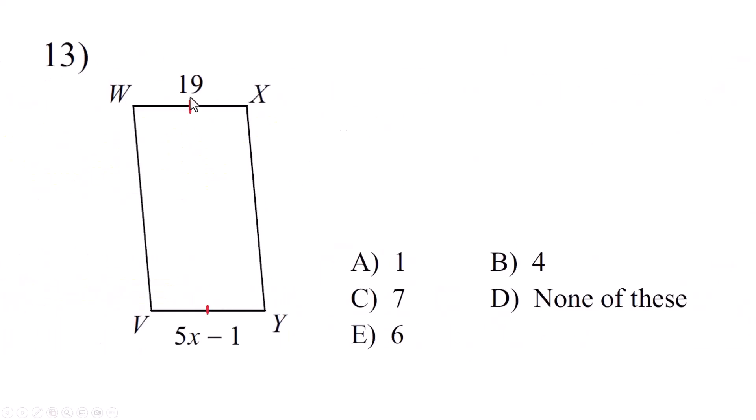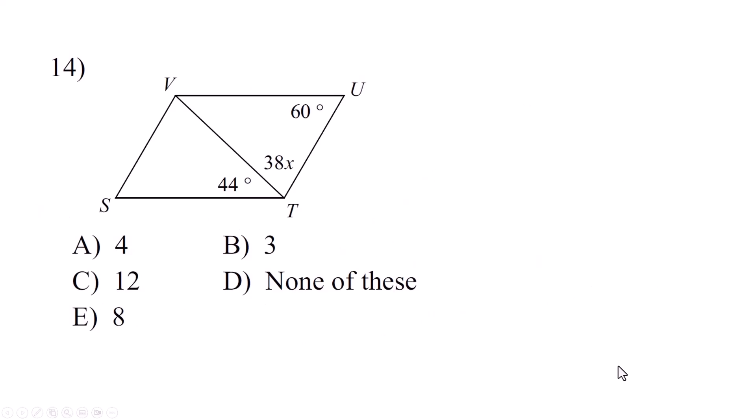In the parallelogram, opposite sides are congruent, which means these two things, the 19 and the 5x minus 1, must be equal to each other. X equals 4. The algebra is not going to be all that difficult, but you do need to know the properties. If you don't have them on your notes, go get that note sheet I made for you.